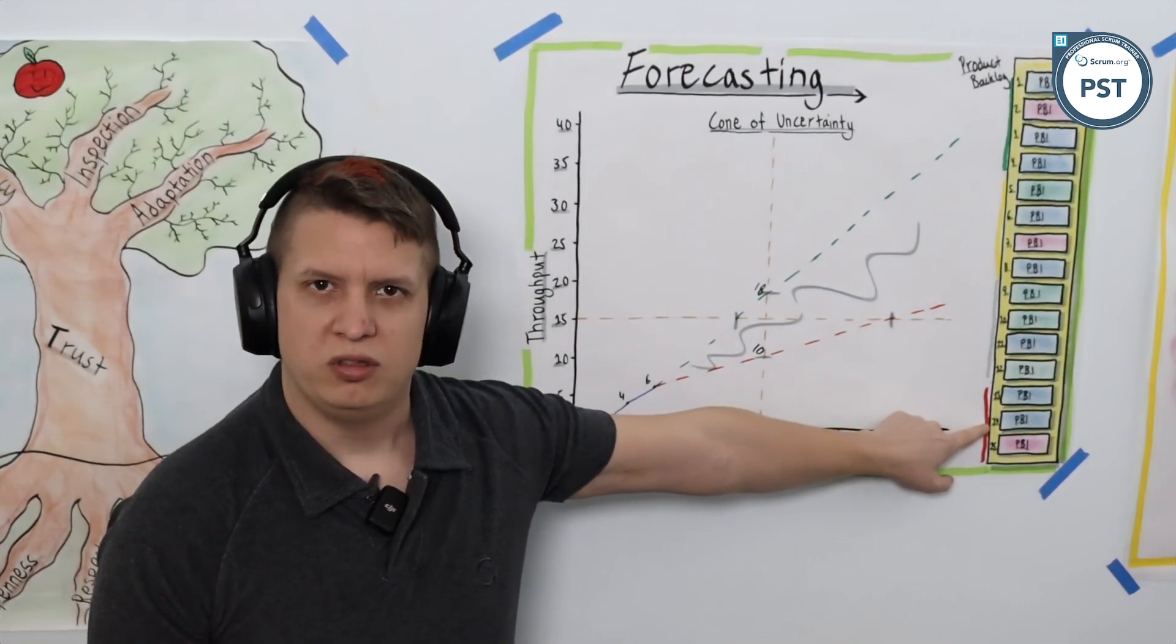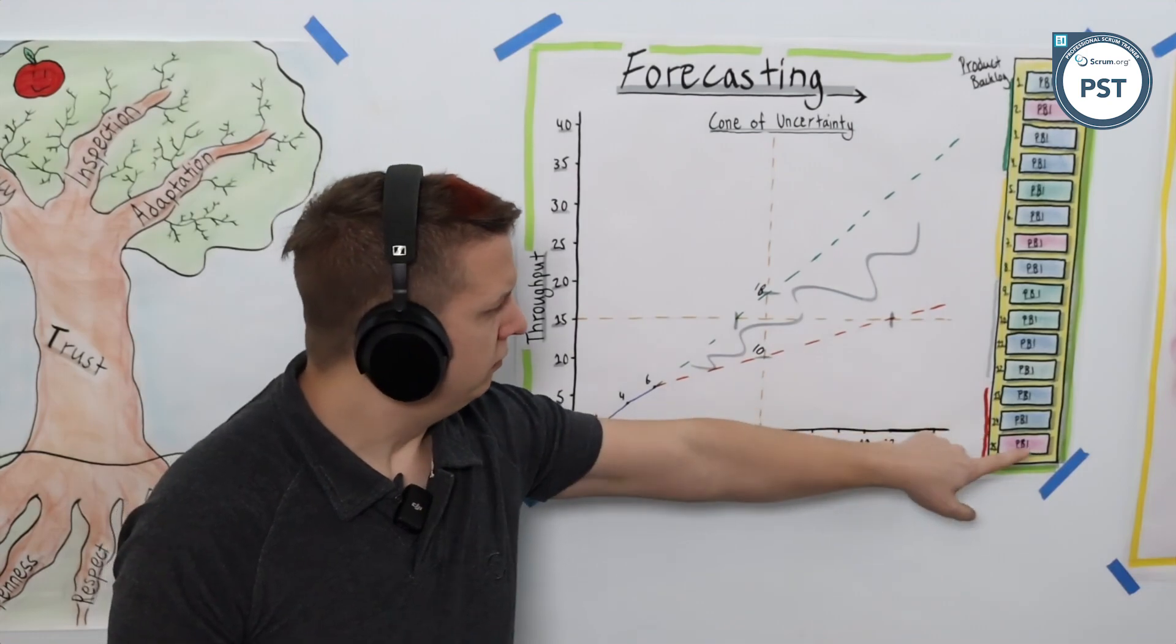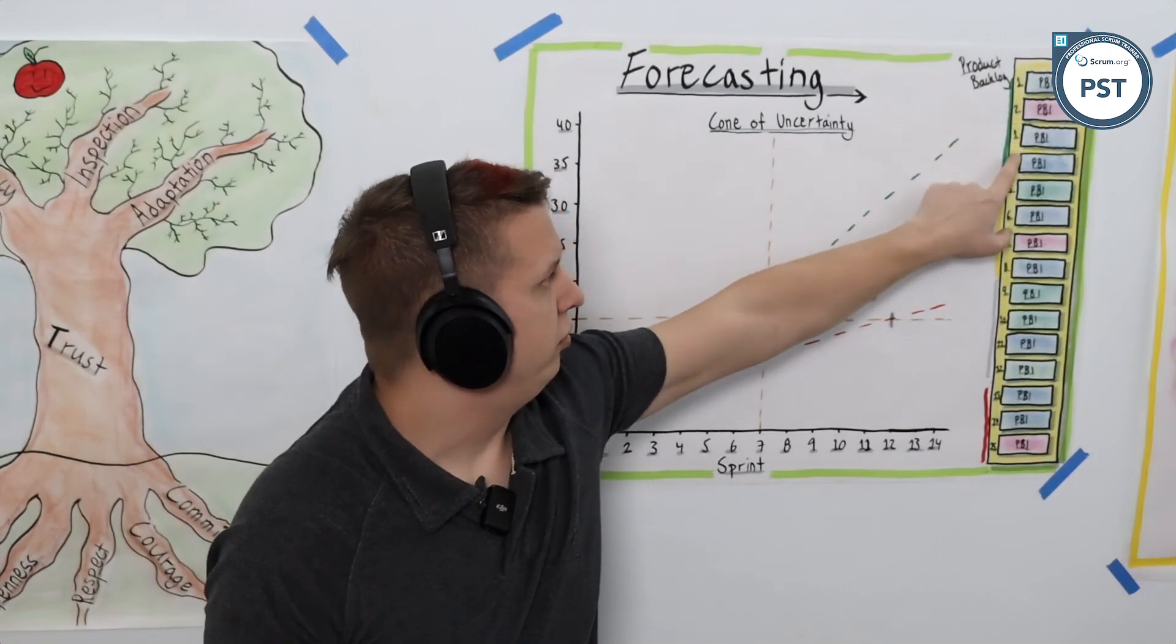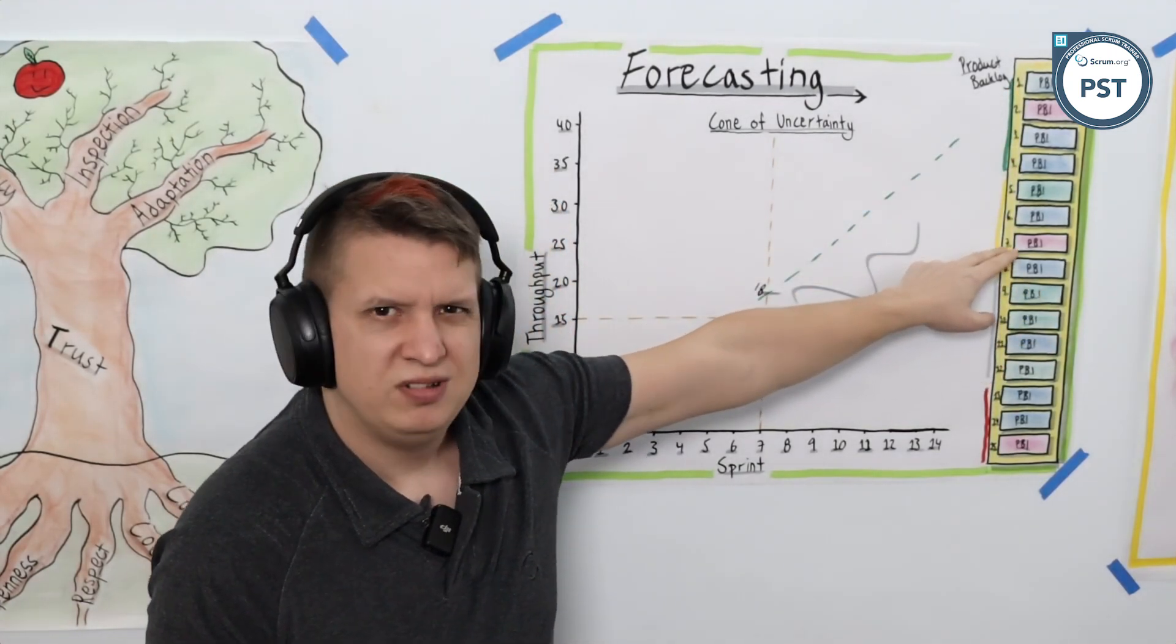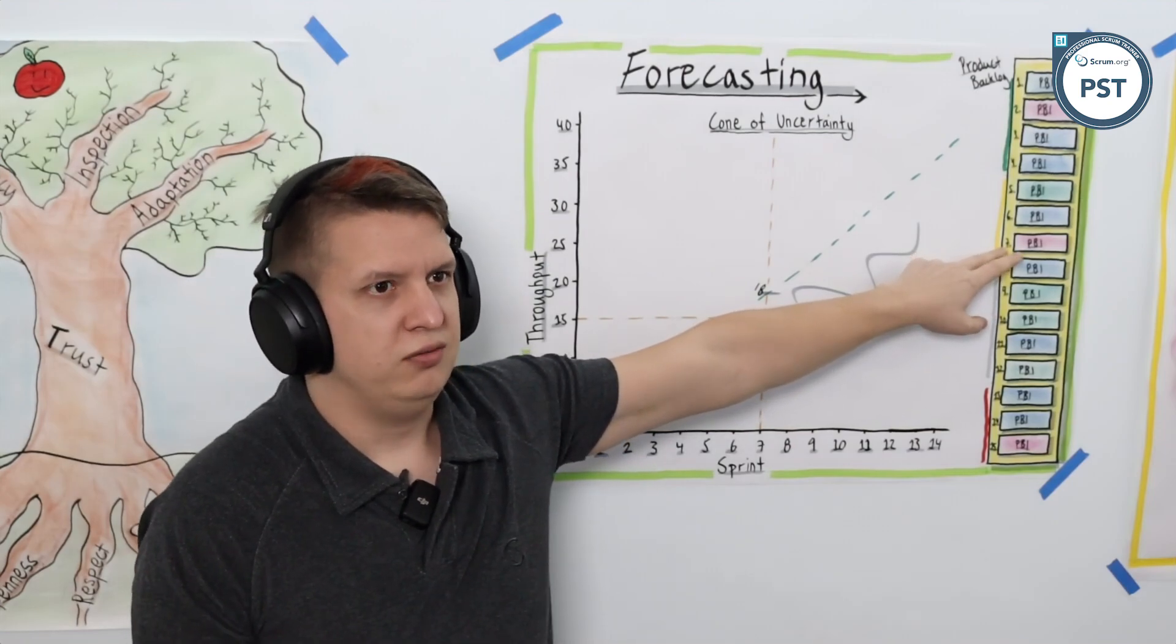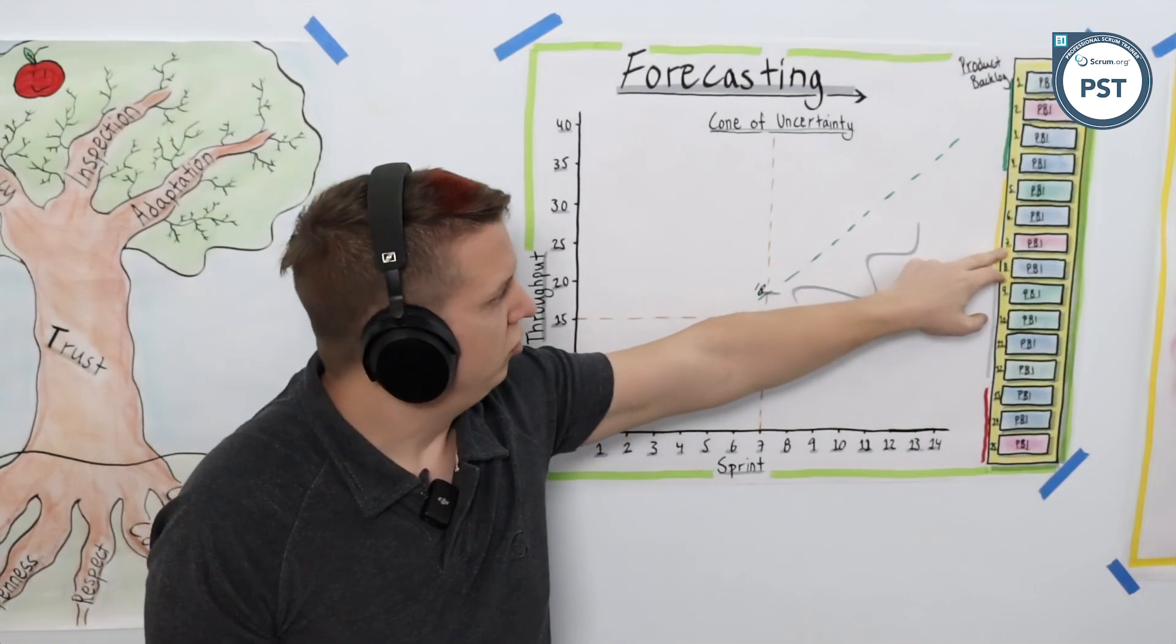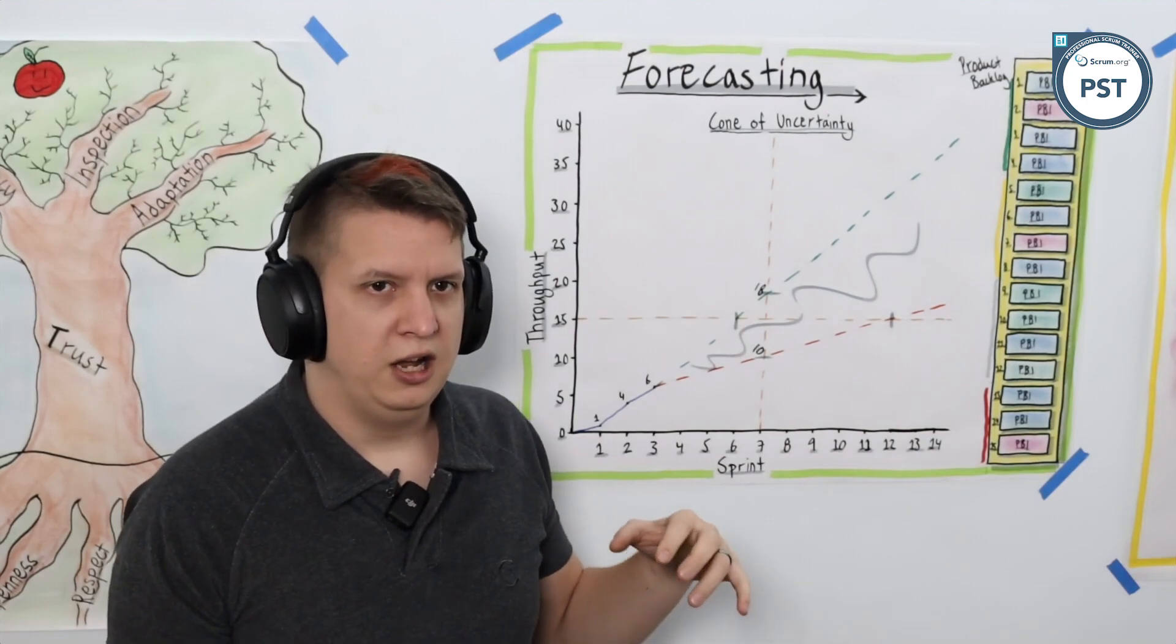If that means that by sprint 7, number 14 actually has to happen - we've got an expo happening where this would really be good to be able to showcase to potential clients or customers - we probably want to reorder the product backlog accordingly and move 14 up into the guaranteed one, two, three, four. Whereas maybe number seven, that one's not so time sensitive. Yeah, we want to get it done, it's valuable, but it can wait until after sprint seven, so let's move it down further in the product backlog.